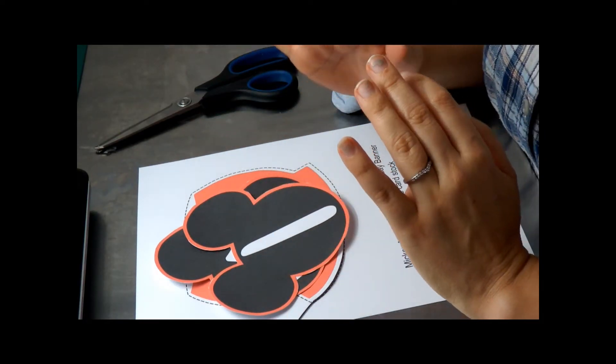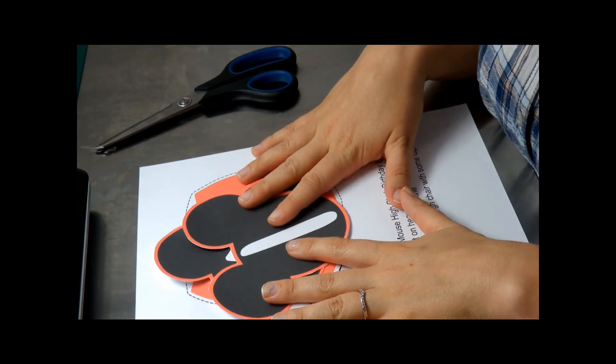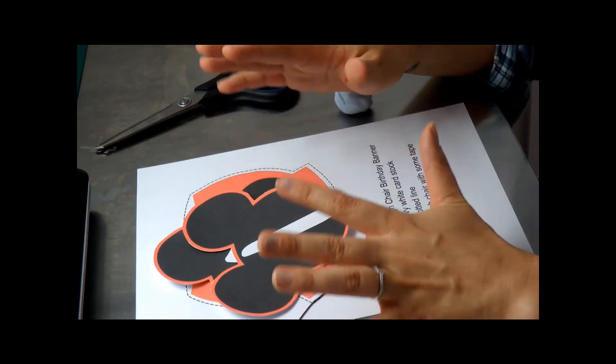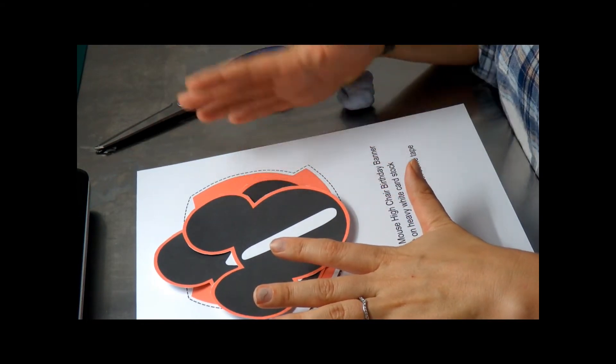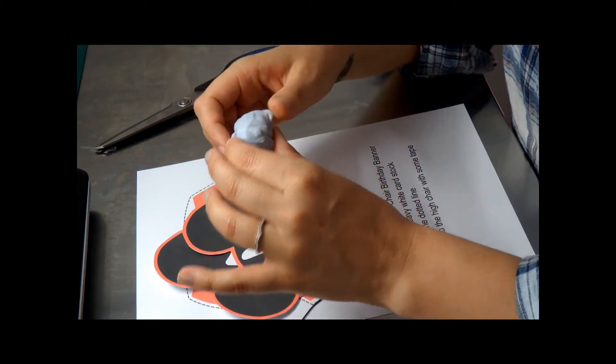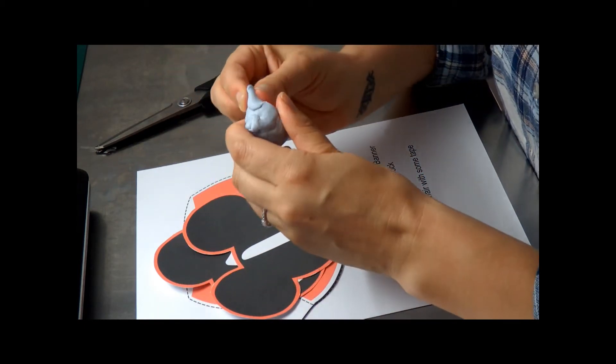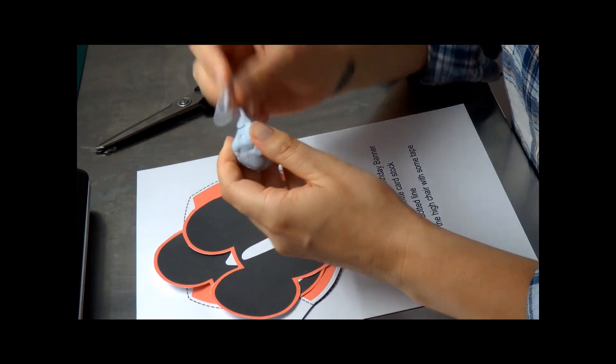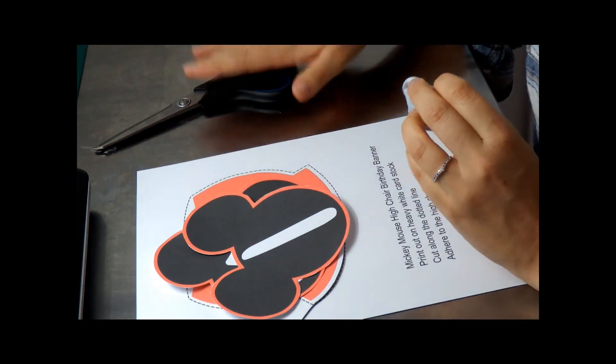All you need to make this banner is your printed images which you can find by clicking on the link in the description box below, your Prestick or Blu Tack which is what you're going to use to stick the images to the high chair, and your scissors.